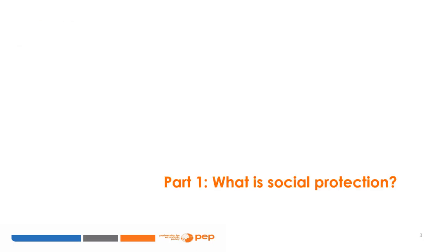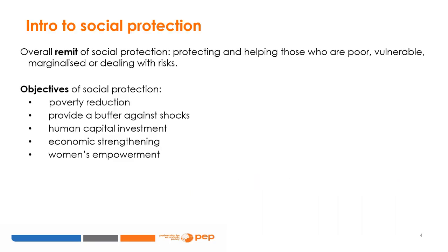Social protection is concerned with protecting and helping those who are poor, vulnerable, marginalized, or dealing with risks. Interventions aim to protect people who live in poverty from the harsh consequences of living in poverty, prevent people from falling into poverty when they experience a shock that either stops them from earning an income or costs a lot of money, such as an illness or a flood, and to help people out of poverty.